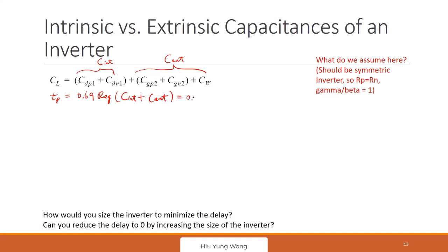So I am going to do one more thing. I say this is 0.69 r equivalent c int times one plus c extrinsic divided by c intrinsic. Here I want to be very clear, what is r equivalent. I did not say r equivalent n or p. I'm just saying that this is going to be the r of the reference transistor.